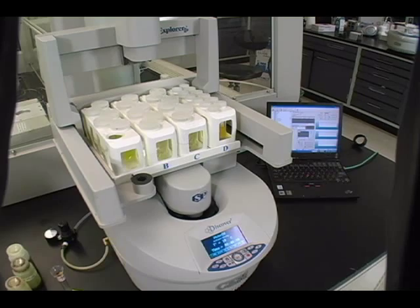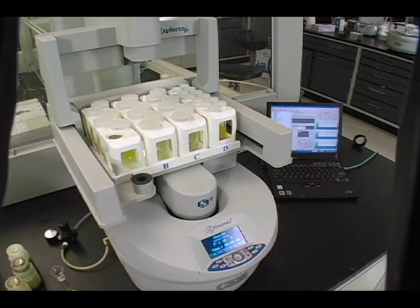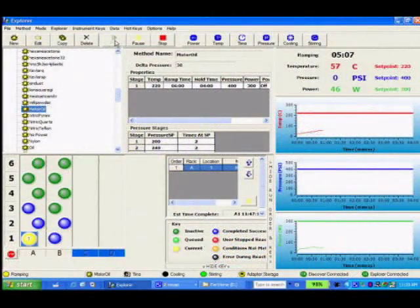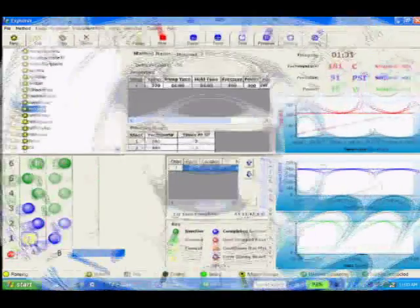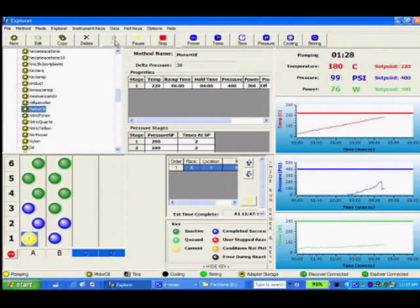The Activent module clamps down on the vial as the PowerMax feature is initiated and digestion begins. The digestion is ramped to 200 degrees or more in 3 minutes or less under full pressure and temperature control.